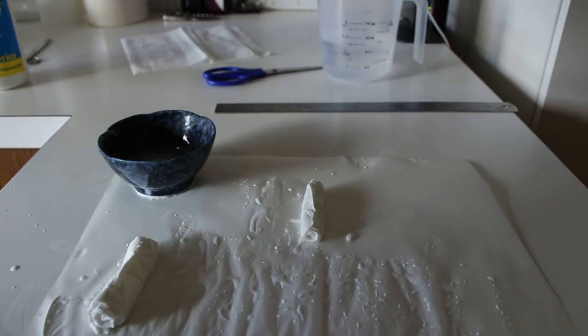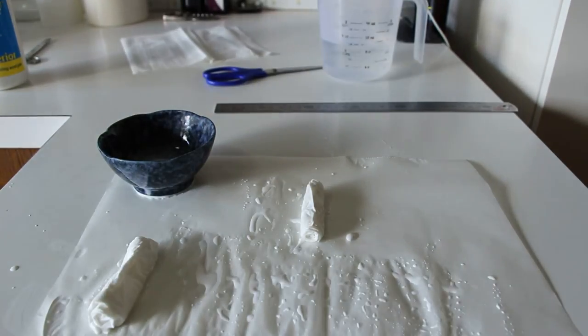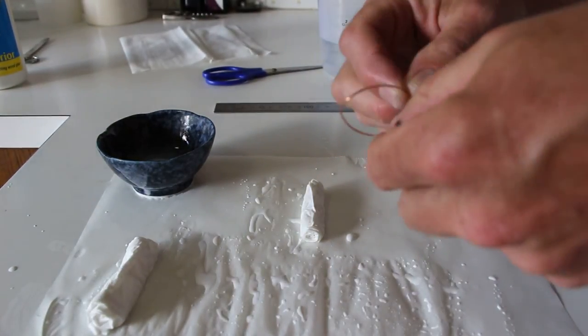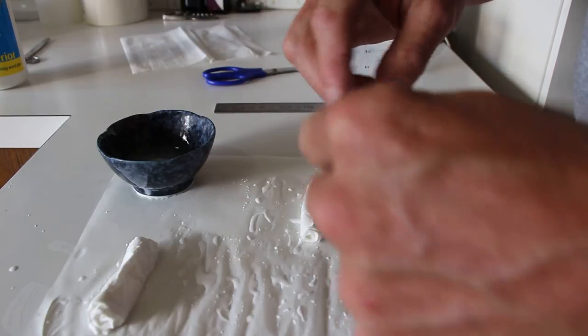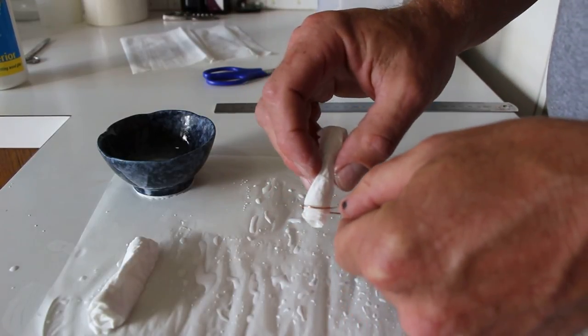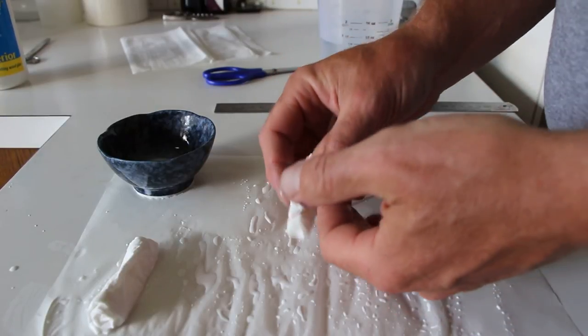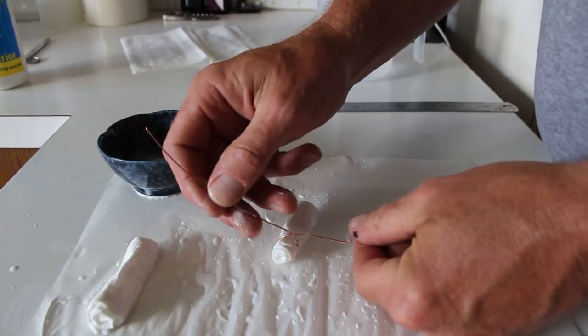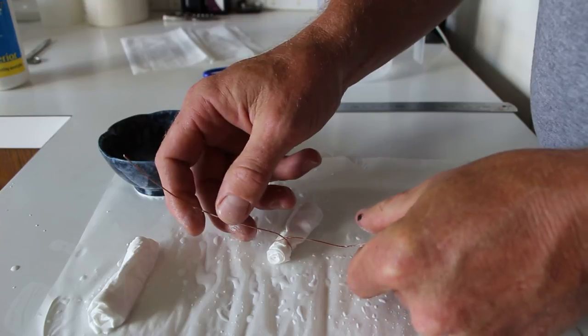Next stage is simply grab a little piece of, I use just copper wire. Just get it roughly in the shape you want, poking through the tarp, and I just twitch it up like that.